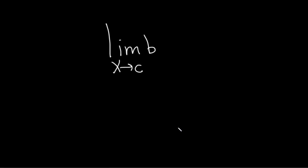In this problem we're going to find the limit as x approaches c of b. The answer is just b. One way to think about it: as x gets really, really close to c, what's happening to b? Well, it's always just b. It's constant. It never changes. So the answer is just b.